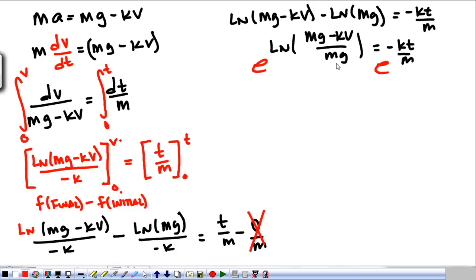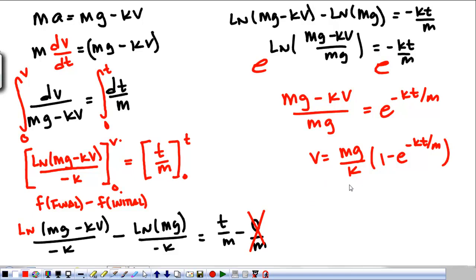So, we make each of these the exponent to which we raise e, and that gives us Mg minus kv over Mg equals e to the negative kt over m. Multiply both sides by Mg, subtract Mg from both sides, and we get, if we do it all, we get v equals Mg over k times 1 minus e to the negative kt over m. I skipped some steps on the algebra, I showed it last night though, so you can go back through and take your time and get that.